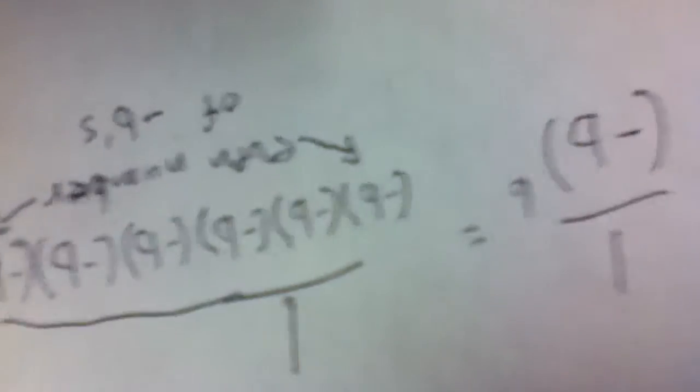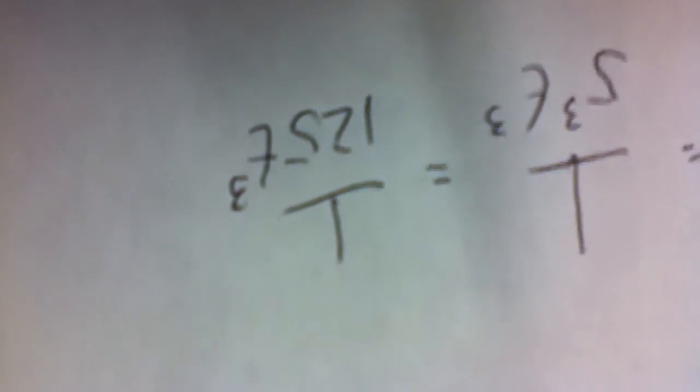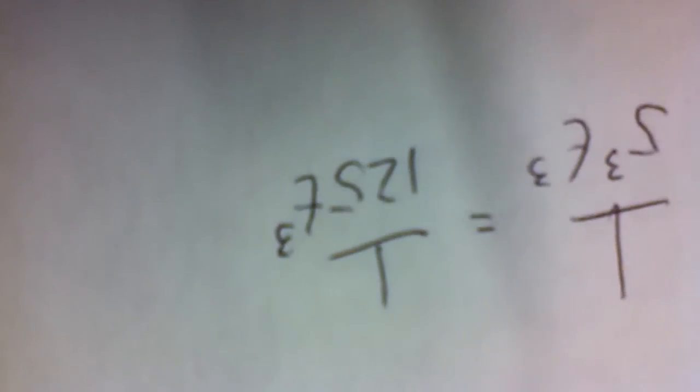Hold on, folks. We have a situation here. Look at this problem while I do this. There we go. Yes, as I was saying, 125. 1 over 125 times t to the 3rd.